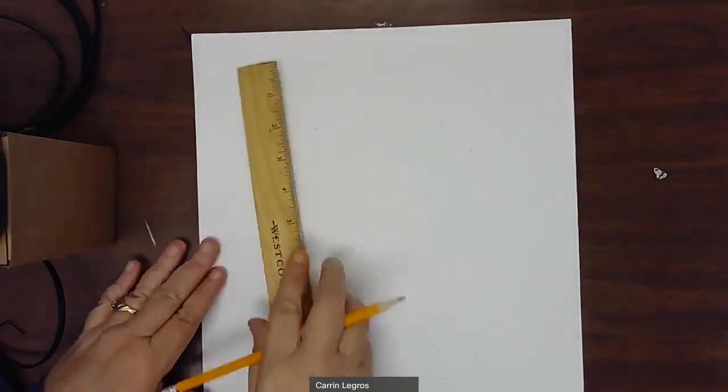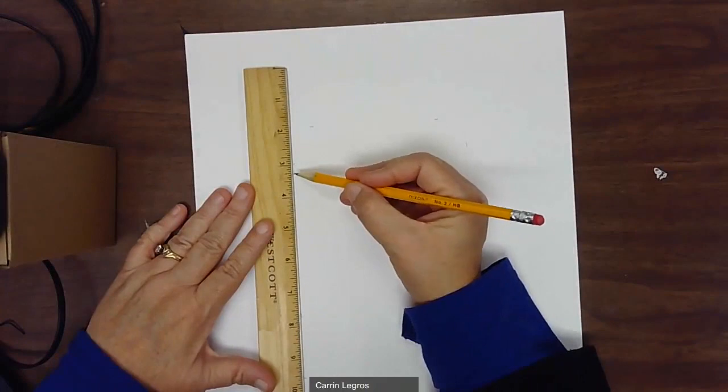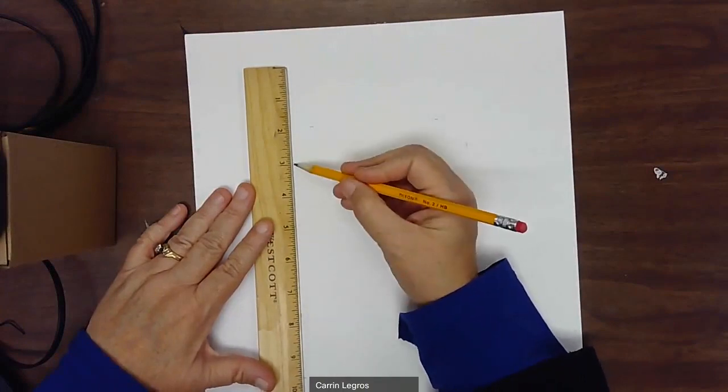Once I have all of my little markings all the way around the page, I'm simply going to take the ruler and line up the ruler next to the markings. So I've got a marking here and a marking here.